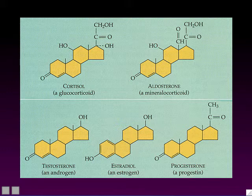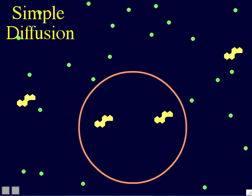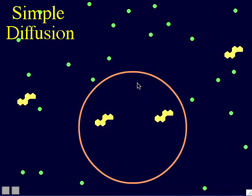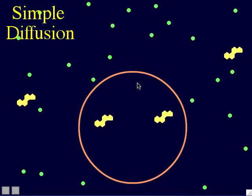Two very important gases are also hydrophobic and can pass through cell membranes by simple diffusion: oxygen gas (O₂) and carbon dioxide gas (CO₂). So oxygen and carbon dioxide are hydrophobic and can go right through cell membranes by simple diffusion. To review: hydrophobic solutes can diffuse right through the cell membrane phospholipid bilayer, and when they do, we call that process simple diffusion.